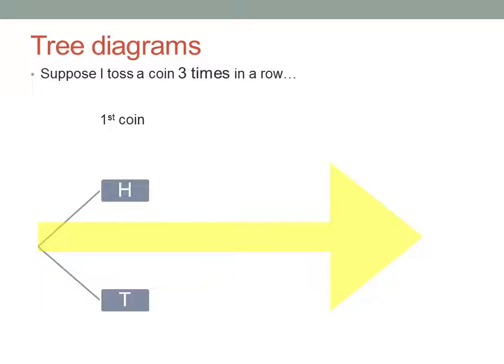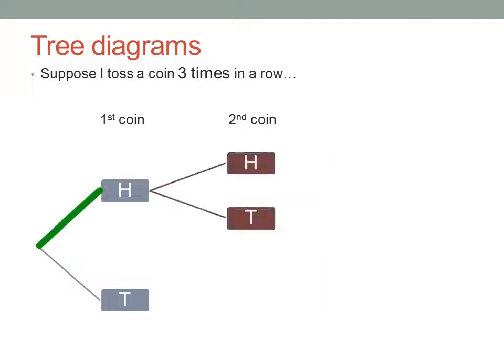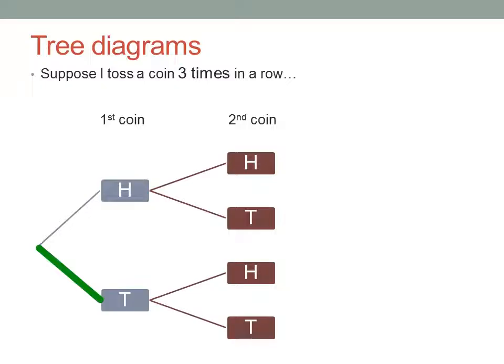Now we're going to move across the page to the right and put in the second coin toss. If the first coin was a head, then the second coin could be a head or a tail. And if the first coin was a tail, then the second coin could still be either a head or a tail.